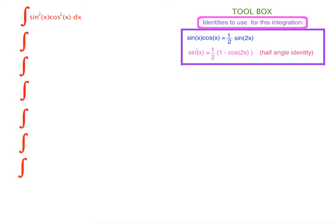Since sine and cosine are in the squared form, we can put them in one parenthesis as (sine x times cosine x) squared. So all we do is just put them in one parenthesis under one square dx.